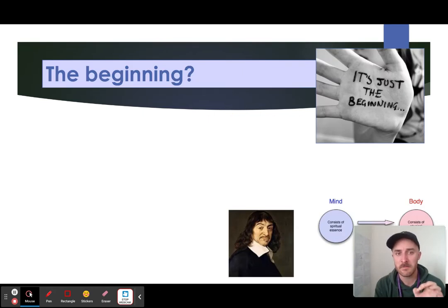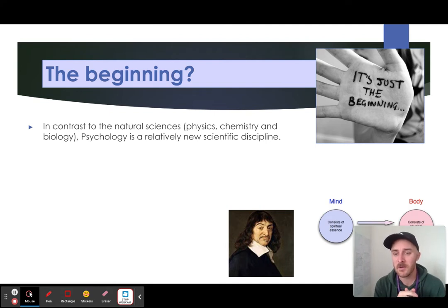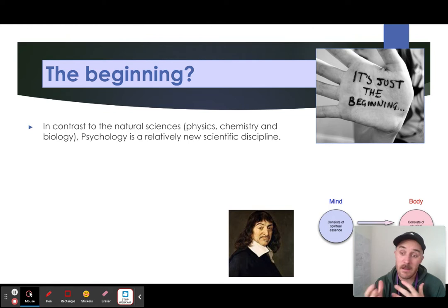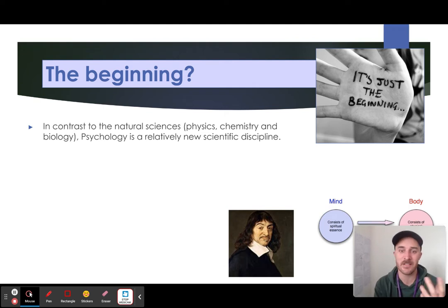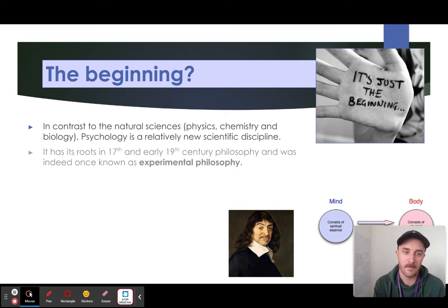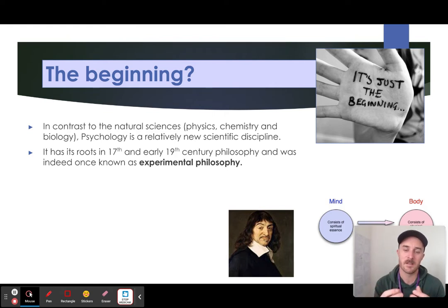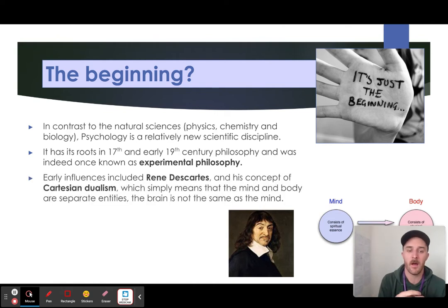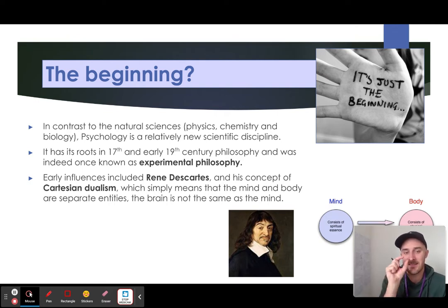I won't spend a lot of time on what came before Wundt, but we need to look at Descartes and how psychology was birthed from philosophy. Psychology is relatively new — at the time of filming roughly 143 years old — whereas biology, chemistry, and physics have existed for millennia. Philosophy from the 17th to 19th century is where psychology came from, and a key idea from that period is Cartesian dualism: the idea that the mind and body are separate.